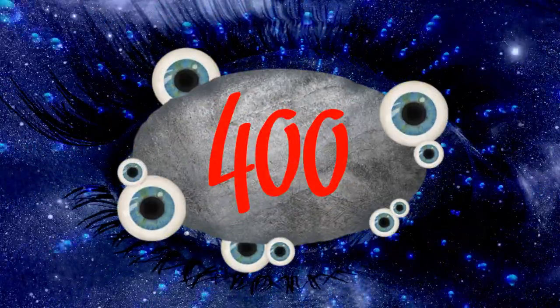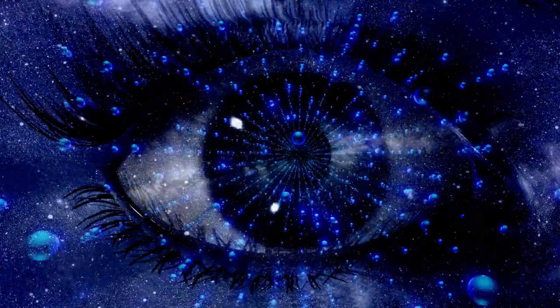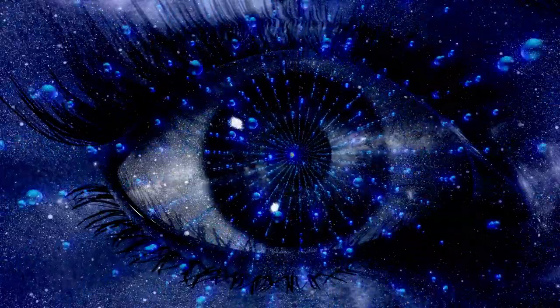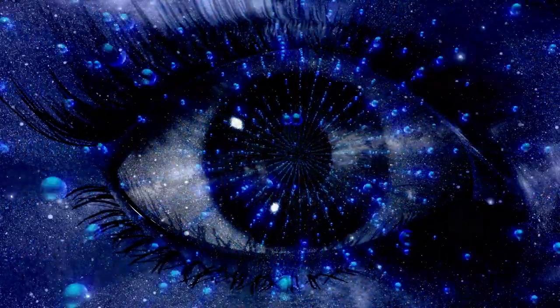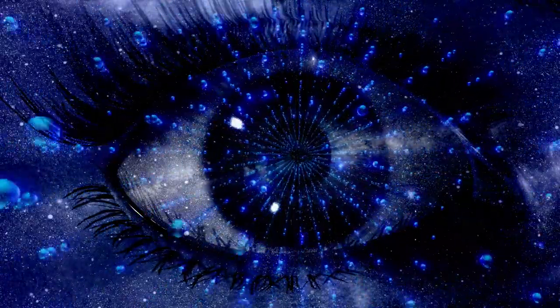Angel number 400 is a powerful symbol of divine love and protection. It indicates that your divine guides are always with you. They will help you to achieve your goals and dreams. The universe wants nothing more than to see you grow and prosper. To achieve this, your angels are ready to help you with your aspirations.